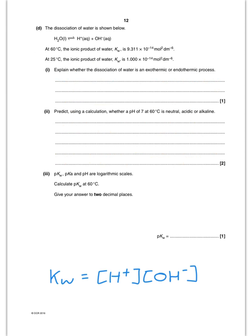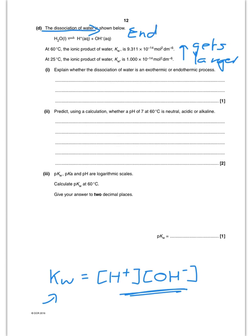They give information about Kw. As temperature increases from 25 to 60°C, Kw gets larger. If Kw is increasing, the expression is shifting to the right — the ion concentrations are increasing — so the dissociation of water must be an endothermic reaction.